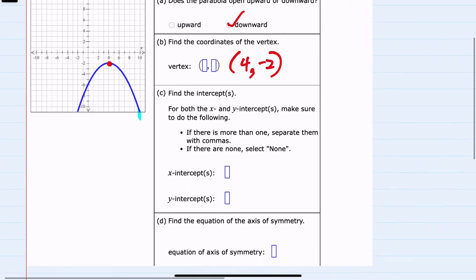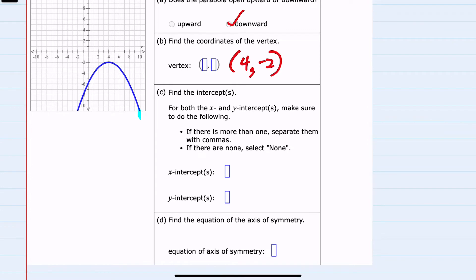Next we're asked to find the intercepts. First, the x-intercepts would be where the parabola crosses the x-axis. For this example it doesn't cross the x-axis, so there are no x-intercepts.